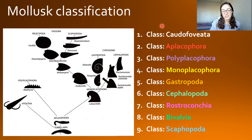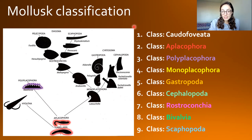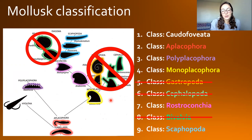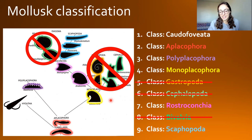Getting into the classification of mollusks, there are nine classes: Caudofoveata, Aplacophora, Polyplacophora, Monoplacophora, Gastropoda, Cephalopoda, Rostroconchia, Bivalvia, and Scaphopoda. We are going to have separate videos for bivalves, gastropods, and cephalopods, so in this video we are not focusing on those three classes. They're definitely worth their own videos — the PowerPoint for bivalves and gastropods alone is packed full of information. So let's get into the classes we still have to go over here.